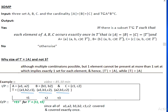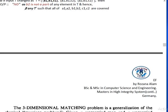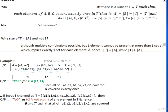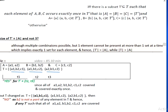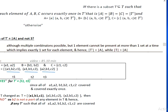But before that, I would like to explain why we are choosing the cardinality of T prime equals the cardinality of A and not three. Although multiple combinations are possible, one element cannot be present at more than one set at a time, which implies exactly one set for each element. Hence, the cardinality of T prime equals the cardinality of A, meaning the length will be the same. We should know that the length of T will be greater than the length of A because T is the cross product of A, B, C, so it will contain more elements.